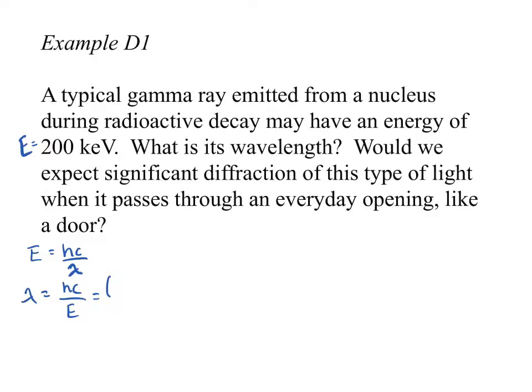So we have for electron volts, 4.14 times 10 to the negative 15 electron volts times seconds. Okay. And then multiplying that by speed of light, 3 times 10 to the 8 meters per second. And then I'll divide that by how much energy it is. And that is 200,000 electron volts. Okay. Cause we have again, kilo electron volts. So that's just multiplying that by a thousand.